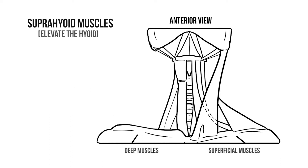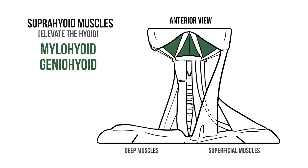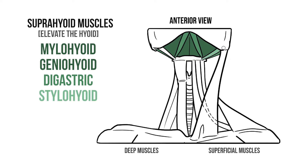Within the suprahyoid group are four pairs of muscles. Forming the floor of the mouth is the mylohyoid. Deep to this is geniohyoid, which hasn't been drawn out. Next we have digastric, an odd little muscle that passes from the jaw to the hyoid but then back up to the skull — this splits it into two distinct bellies, one anterior and one posterior. Finally, the stylohyoid muscle comes down from the styloid process of the skull.